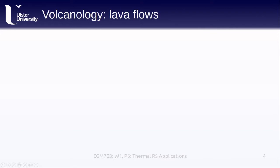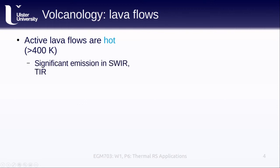Active lava flows are normally incredibly hot, usually in excess of around 400 Kelvin. At higher temperatures, there is significant emission in the shortwave infrared as well as the thermal infrared. This can actually help us with atmospheric correction, since it gives us an additional window to use to estimate the atmospheric components of the radiance measured at the sensor.